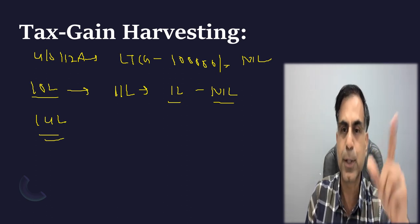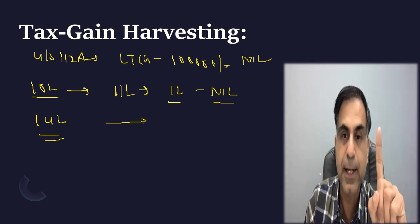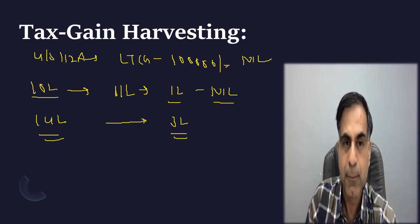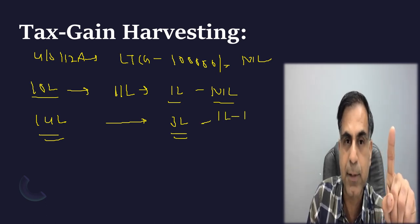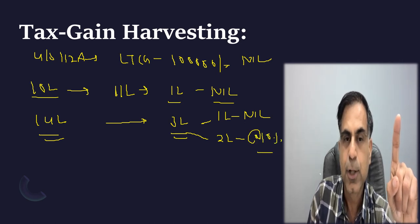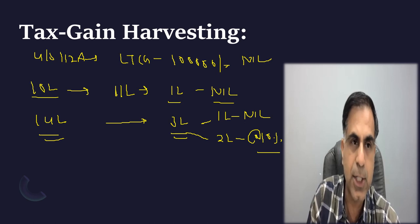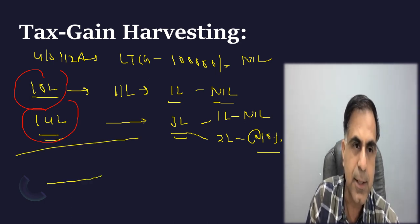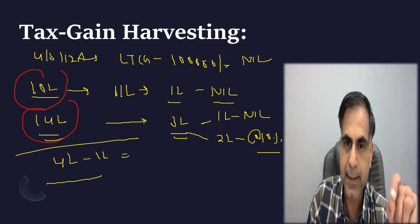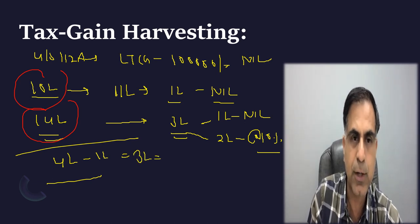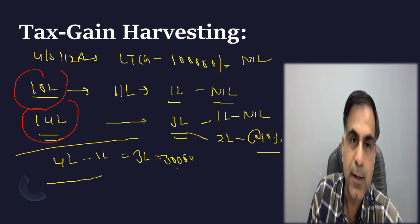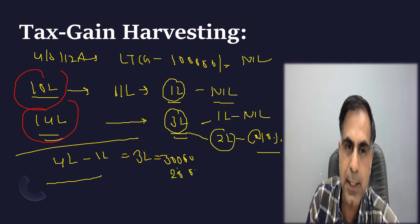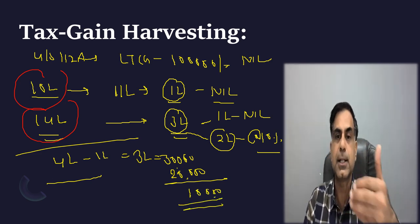Next year, suppose the securities rise to rupees 14 lakh. After holding them for one year, the assessee sells again — 14 minus 11 gives a further 3 lakh rupees capital gain. Again, up to 1 lakh LTCG is nil, and on the balance 2 lakh the tax is 10%, which is rupees 20,000. Compare this to doing the transaction only in the second year: 4 lakh gain, 3 lakh taxable at 10% giving rupees 30,000. By using tax gain harvesting year on year, total tax paid was only rupees 20,000 versus rupees 30,000.